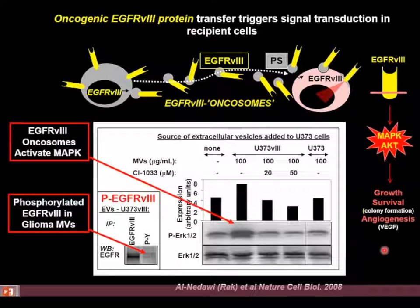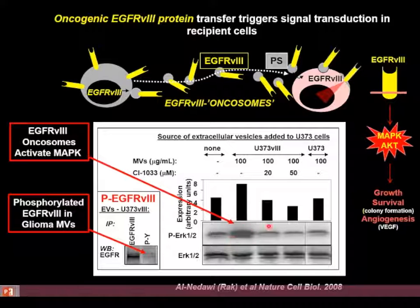What might be the implications of that particular interaction? Do extracellular oncogenes traveling across the intercellular space as cargo of extracellular vesicles impact recipient cells? At least a fraction of extracellular EGF receptor variant 3 found in vesicles is in a phosphorylated or activated state. Uptake of this material can trigger canonical events downstream of activated EGF receptor, including phosphorylation of MAP kinase, AKT pathway, and biological responses such as growth, survival, and onset of angiogenesis.